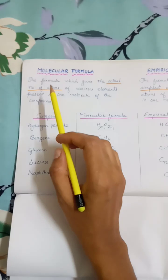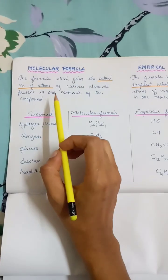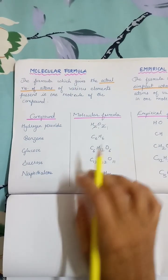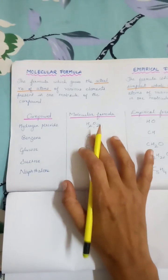Difference between molecular formula and empirical formula. The formula which gives actual number of atoms of various elements present in one molecule of the compound is known as molecular formula.